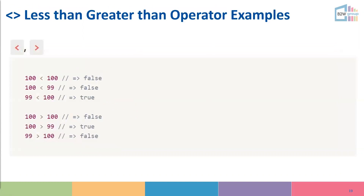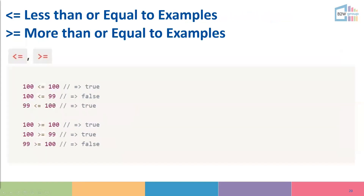For less-than examples: 100 less than 100 is false because they're the same number; 100 less than 99 is false because you can't have 100 below 99; 99 less than 100 is true. The same logic applies for greater-than. For less-than-or-equal-to: 100 less-than-or-equal-to 100 is true because of the equal sign; 100 less-than-or-equal-to 99 is false because neither condition is met; 99 less-than-or-equal-to 100 is true because 99 is less than 100.